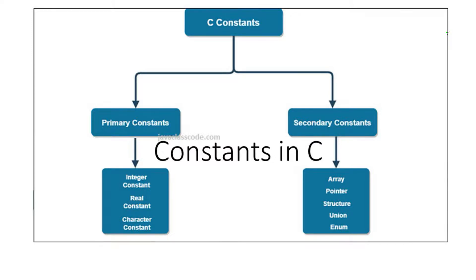I've put them into two categories: primary and secondary. Under primary you have integer constants, real constants, and character constants. Under secondary you have arrays, pointers, structures, unions, and enumerators (enum).